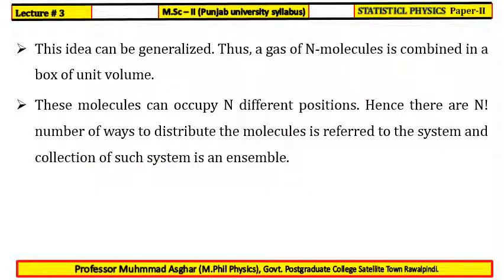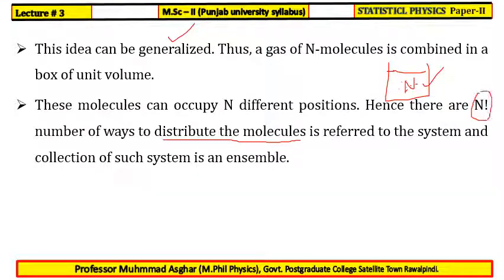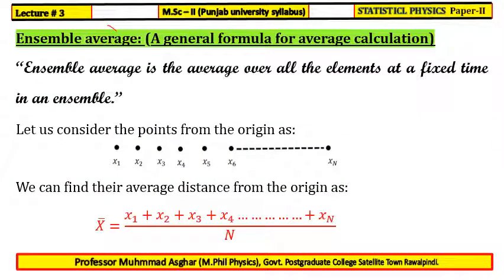We can generalize this idea: consider a gas with N molecules in a container. If there are M possible ways to arrange or distribute the molecules, we get N-factorial number of ways. This collection of N-factorial arrangements forms an ensemble.